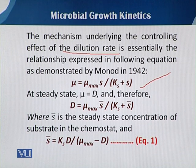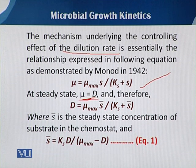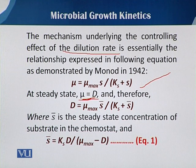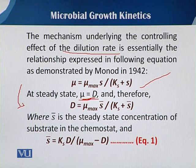In a continuous culture, when we say that mu equals D, our specific growth rate becomes equal to the dilution rate. When there is dilution and growth and no further change in cell mass concentration in the fermentation vessel, we can transform this equation by replacing mu with D. So we can write: D equals mu_max times s̄, over Ks plus s̄.